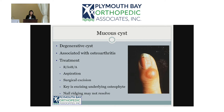Treatment for mucus cysts: rest, ice or heat, anti-inflammatories, and you can try to aspirate and compress the cyst, but it often recurs. With surgery, you trace the cyst back to the joint capsule, remove a piece of that capsule to get the root out, then go into the joint through an arthrotomy and smooth the bone spur. Doing both steps together results in a lower recurrence rate than just taking the cyst out alone.